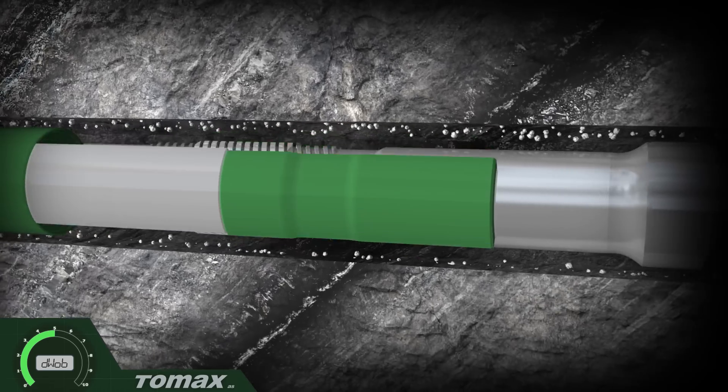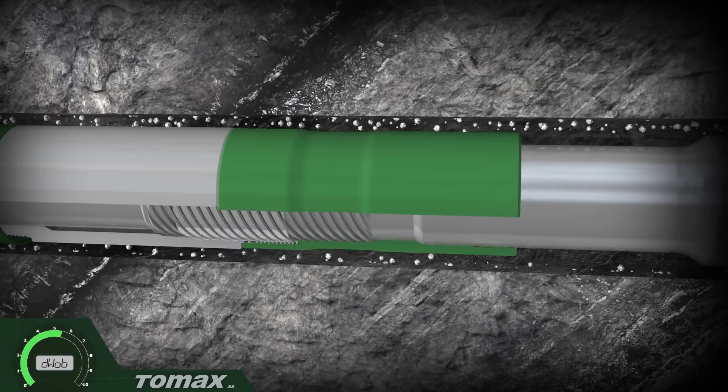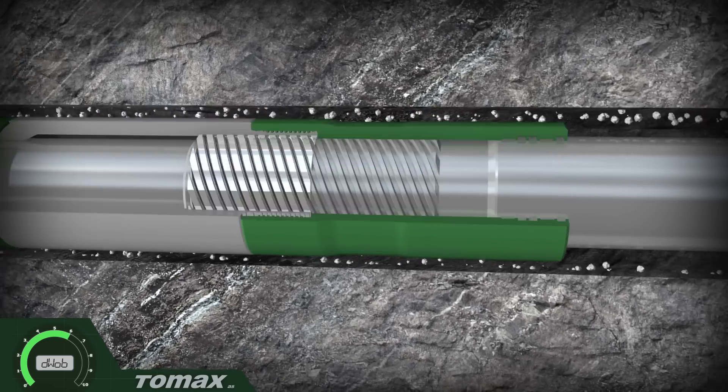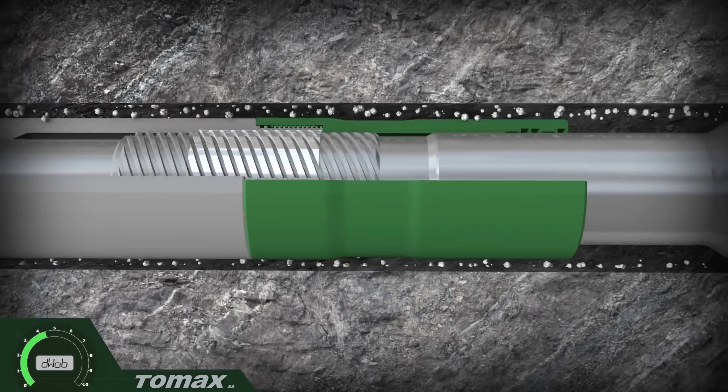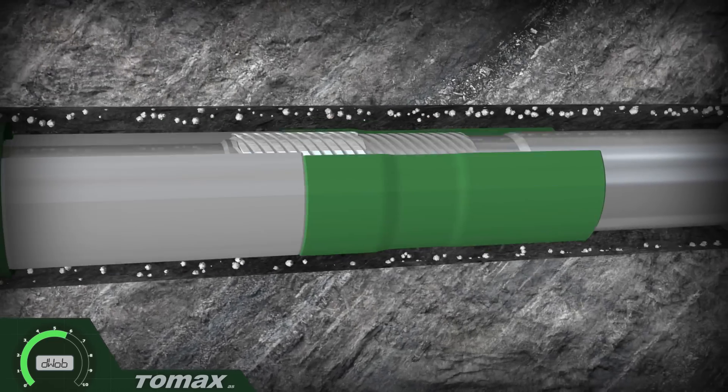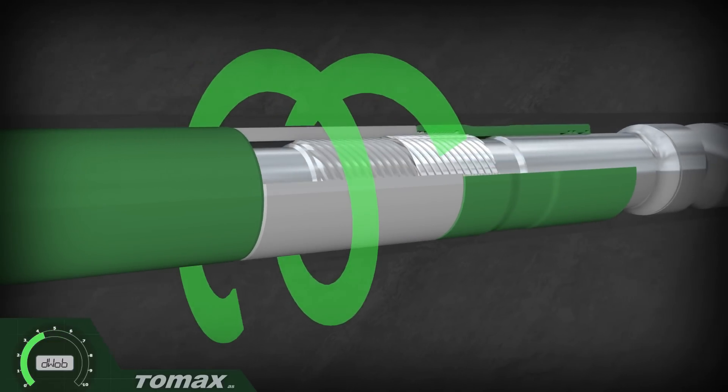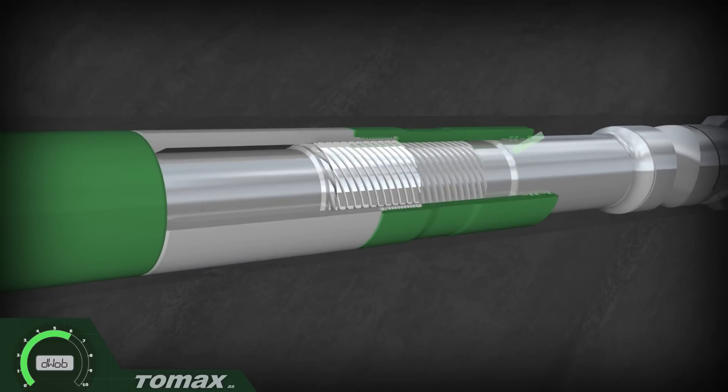The AST converts excessive torque into reduced weight on bit by utilising a helical spline. As the torque increases, the helical activation angle increases, shortening the tool. This temporary change in length reduces the effective weight on bit, enabling a decrease in the cutting depth.